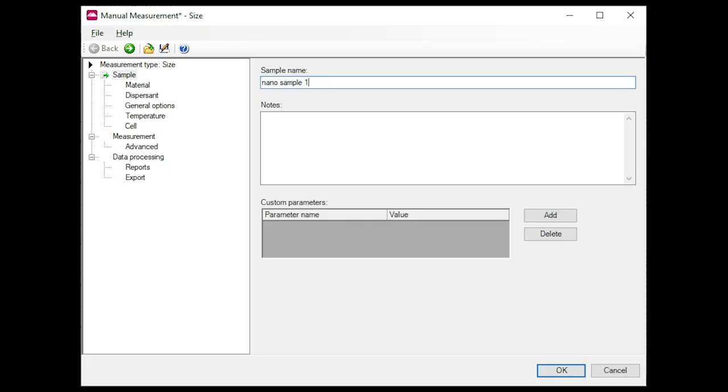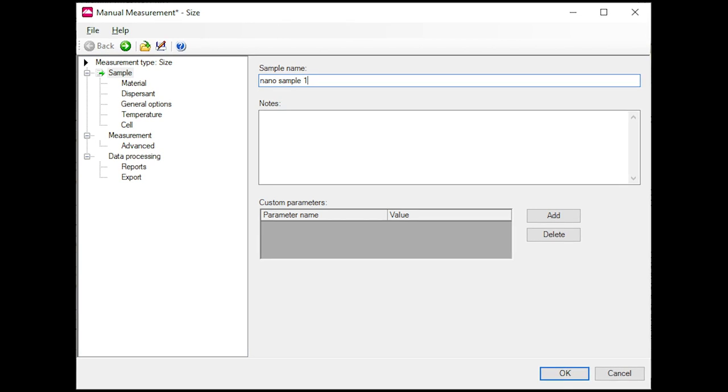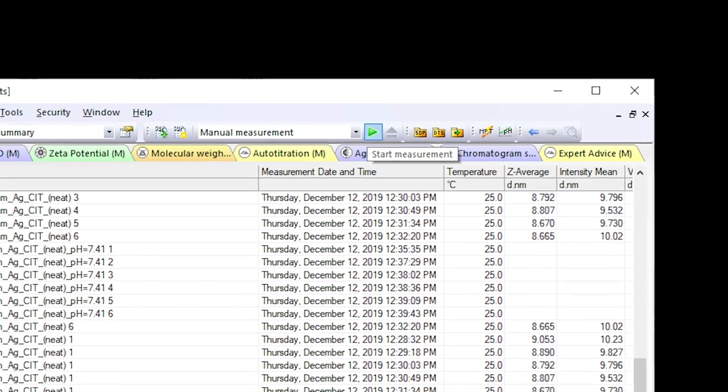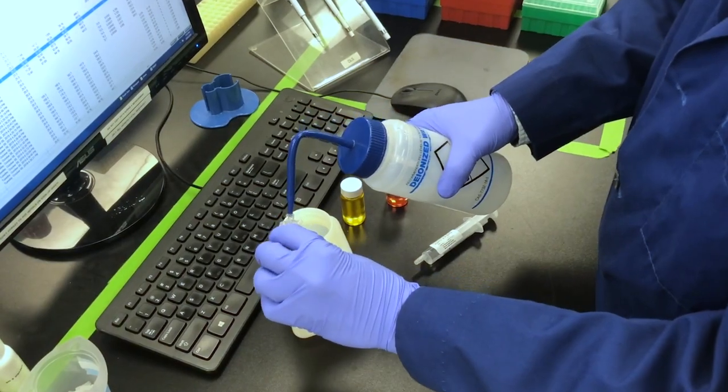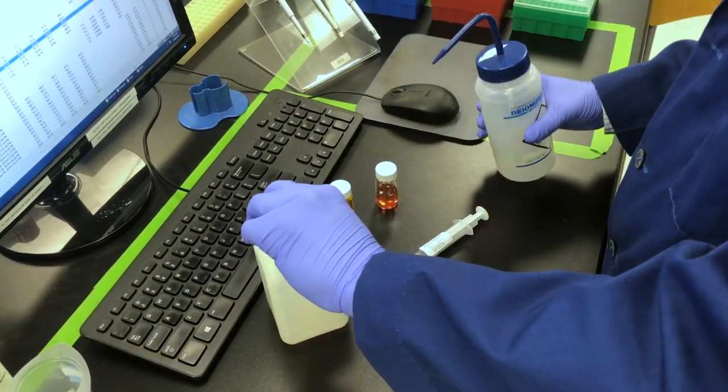Within the instrument software suite, navigate to the SOP of interest or manually configure the measurement as necessary and press start to begin your measurement. Measurements can often take more than a few minutes, so be sure to return and claim the zeta cell afterward by draining it of sample and then rinsing with deionized water.